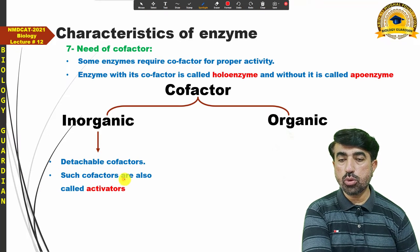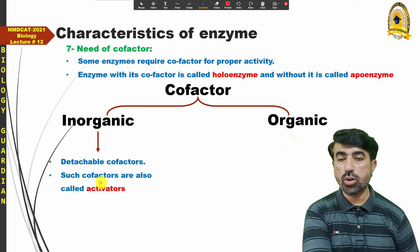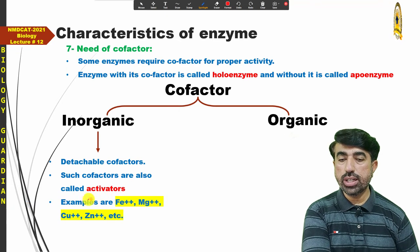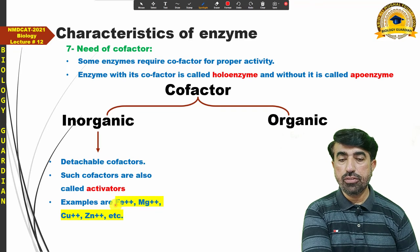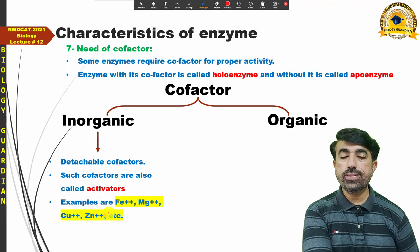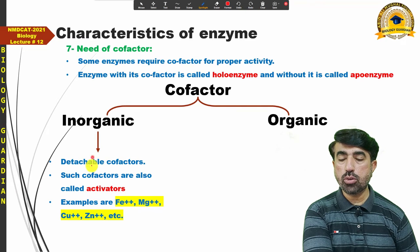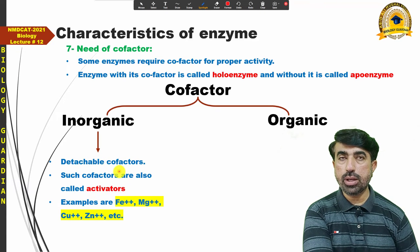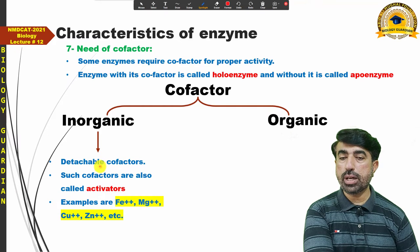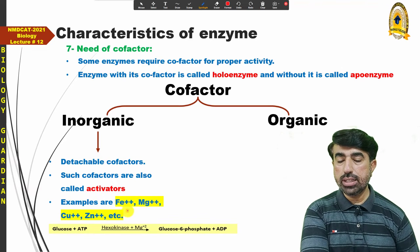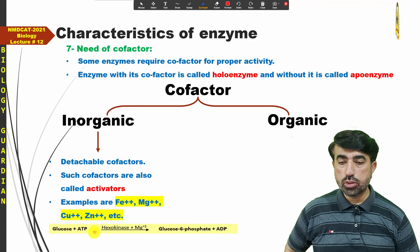Regarding co-factor types: some co-factors are detachable — they participate with the enzyme at the time of reaction and then separate after the reaction is complete. These are called detachable co-factors. For inorganic, detachable co-factors, the term used is activators. Examples include metal ions such as ferrous iron (Fe²⁺), magnesium (Mg²⁺), copper, and zinc — these inorganic metal ions act as co-factors called activators.